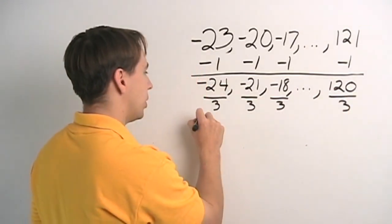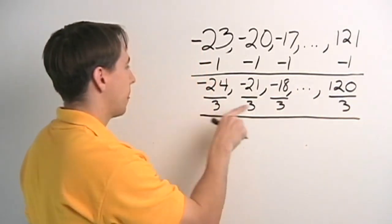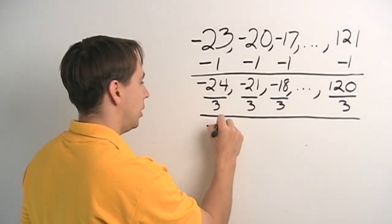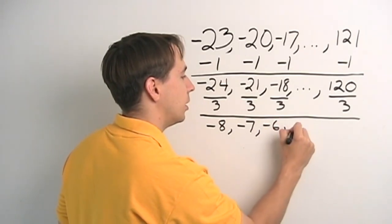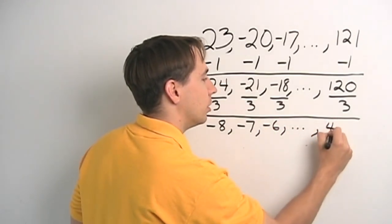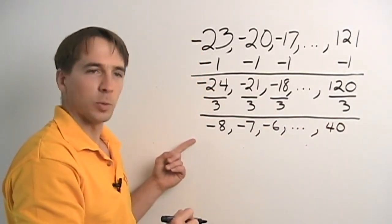And let's see what that does to our list. We get negative 8, then negative 7, then negative 6, and so on up to 40.